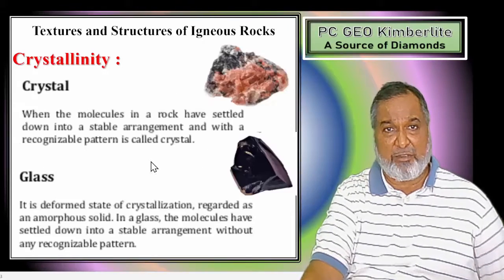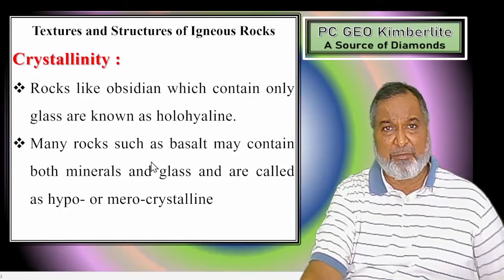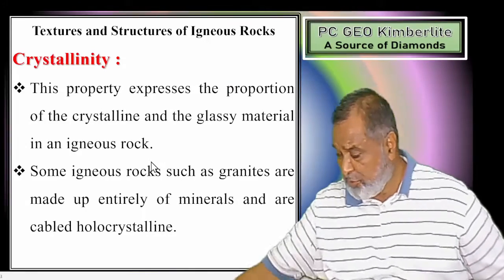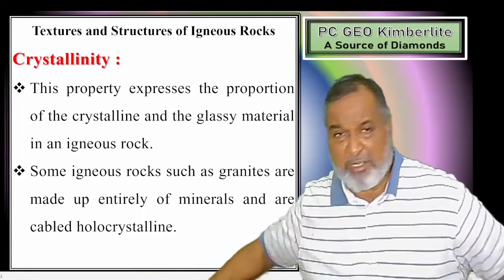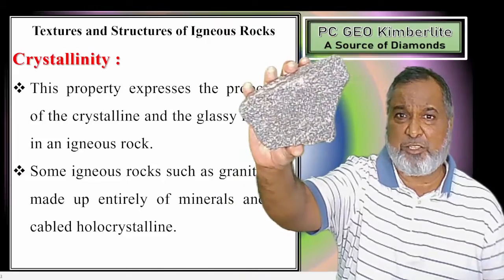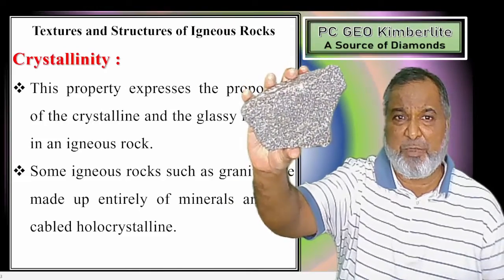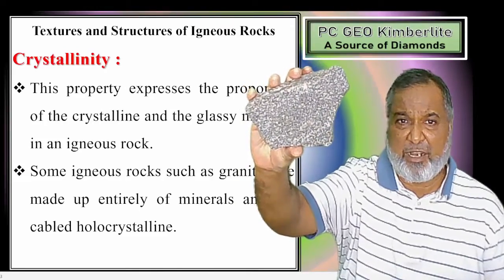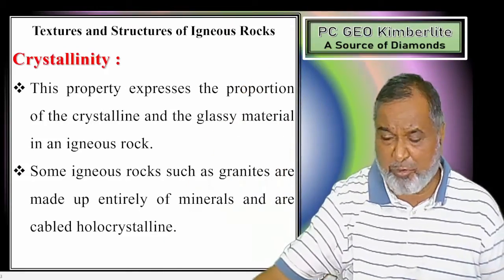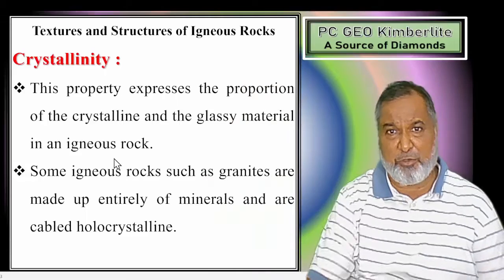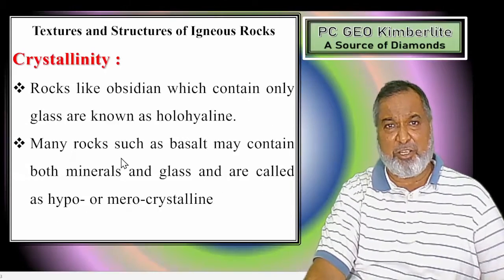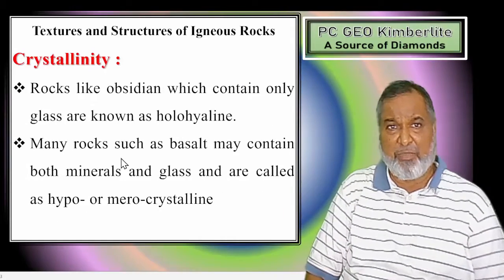Granite has 100% crystals. This is the best rock to be studied and it is going to give you a particular texture - the granitic texture or equigranular texture. Rocks like obsidian contain 100% glass.